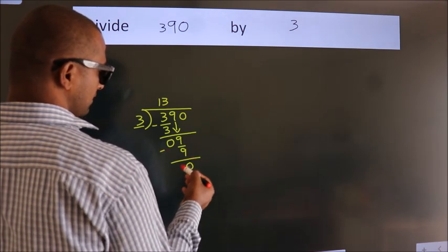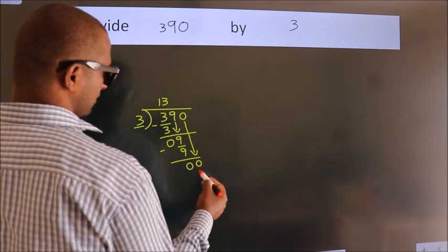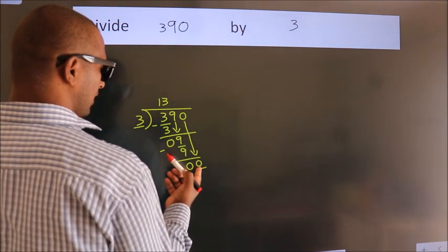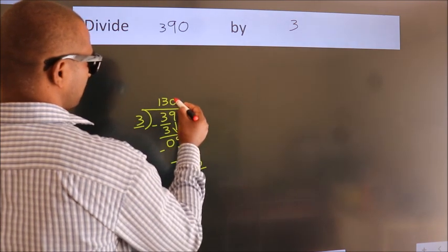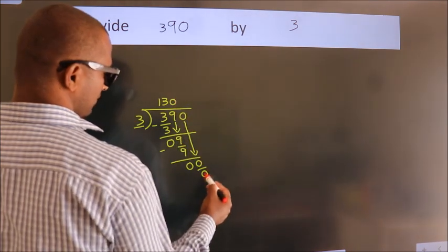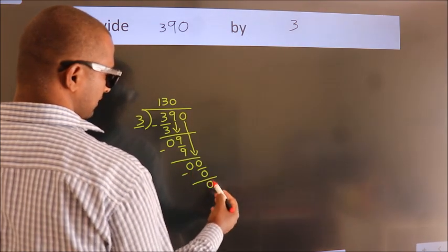After this, bring down the beside number, so 0 down. When do we get 0? In 3 table, 3 times 0 is 0. Now we subtract, we get 0.